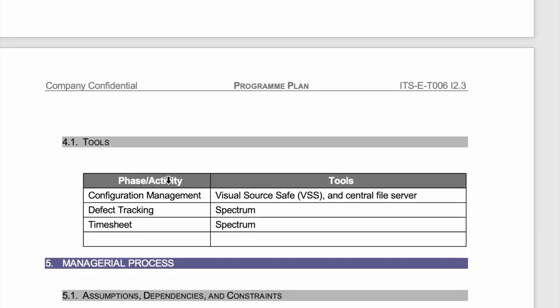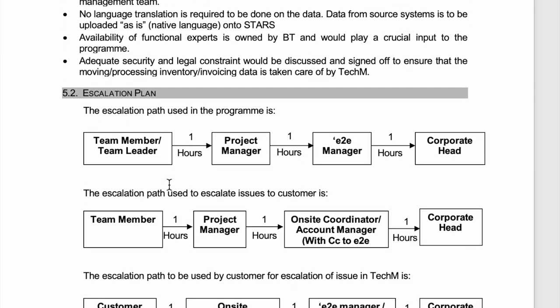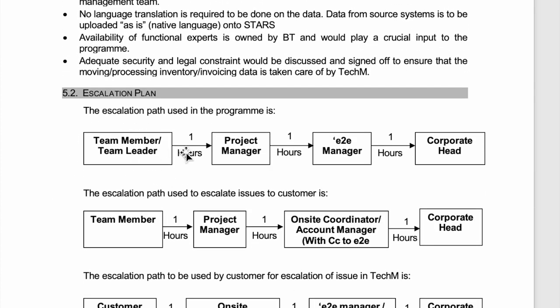Besides this, escalation path. Team members will know, if some escalation comes, after that, within one hour, they will tell the project manager. If the project manager can't solve it, then within one hour, they'll tell the end-to-end manager. If it's not solved there either, then they'll tell the corporate head. So this is the escalation path of the program.